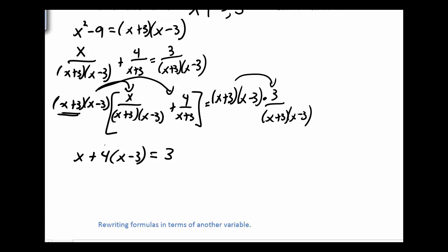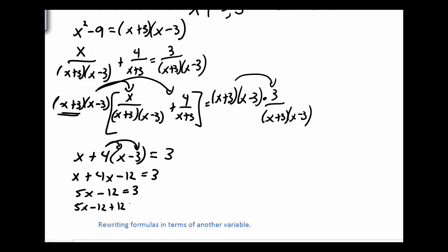Then I can distribute again: the 4 goes into (x minus 3), giving x plus 4x minus 12 equals 3. I can combine like terms on the same side: 5x minus 12 equals 3. I notice I can add 12 to both sides, giving 5x equals 15. Dividing by 5, x happens to be 3.